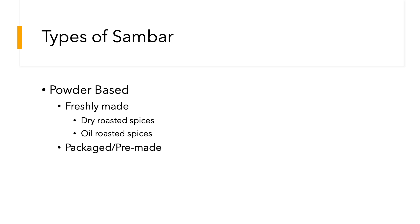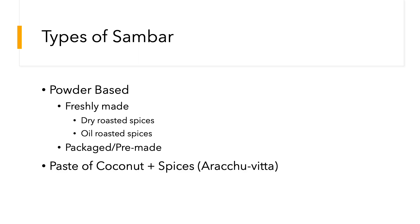The second option is that you don't have to freshly make the powder — most people don't have the time or the inclination, and don't store all those spices at home. You can simply buy store-bought sambar powder; there are thousands of brands. So either you can freshly make the sambar powder or buy pre-packaged sambar powder — we'll talk about the pros and cons shortly.